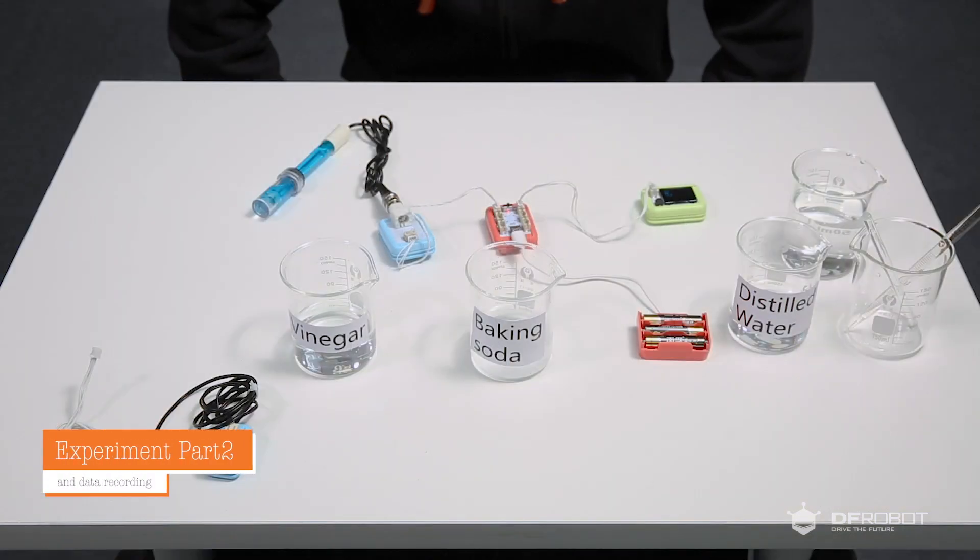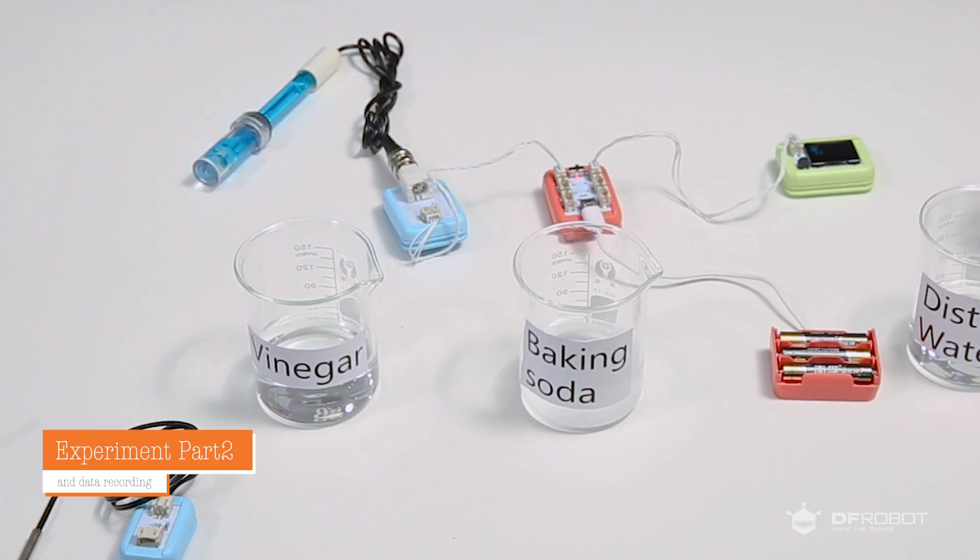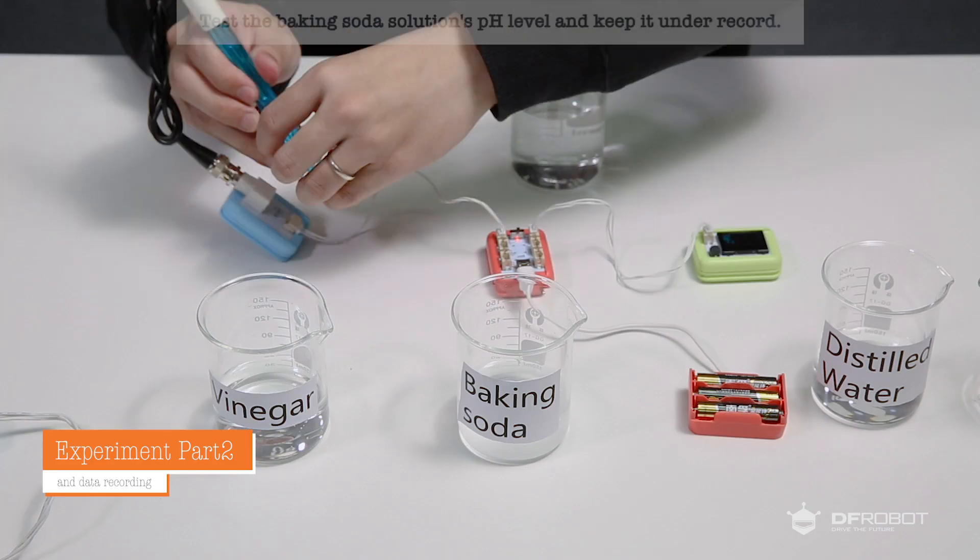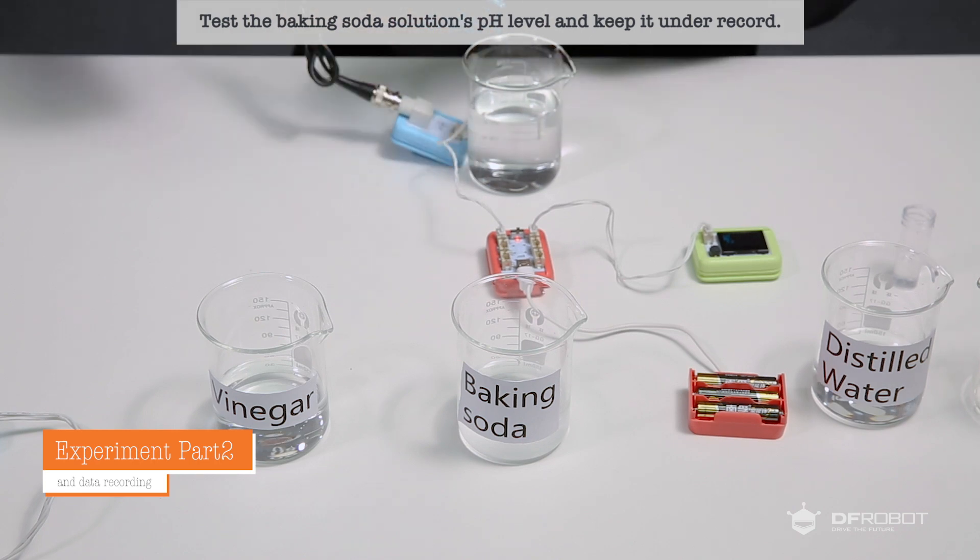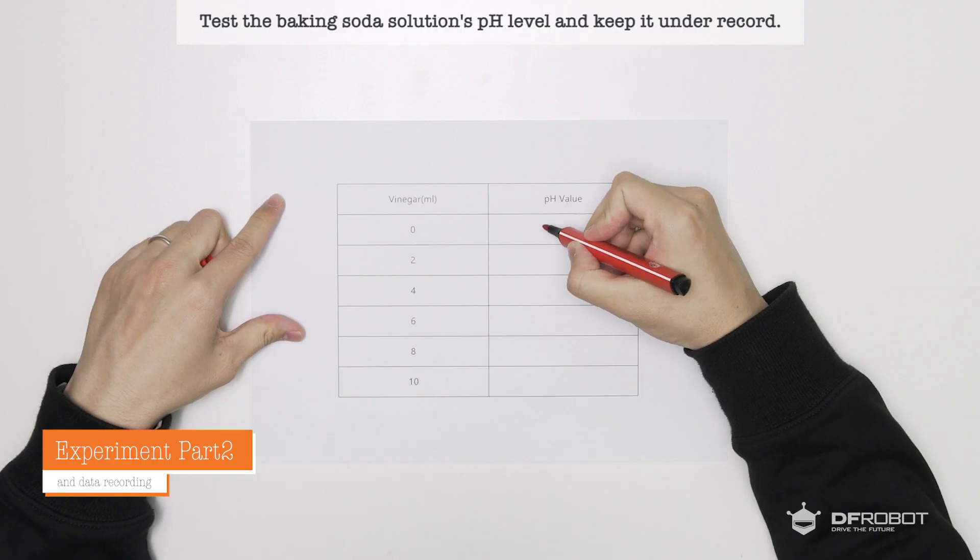And next let's test the change in pH level. Bring one cup of fresh baking soda solution on the desk. Then we will use the pH sensor for the pH level and keep it under record.